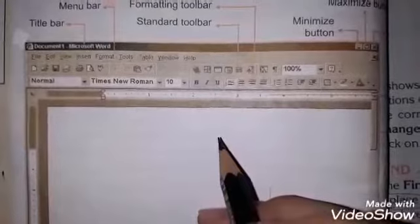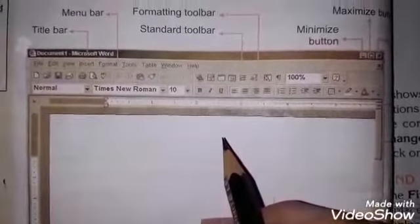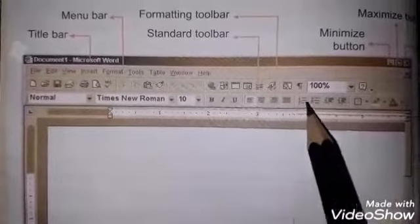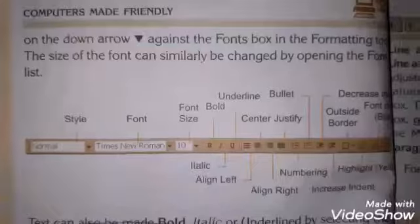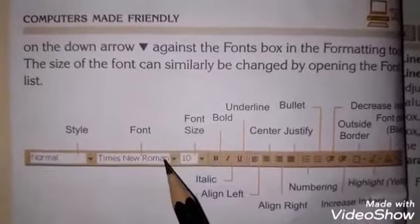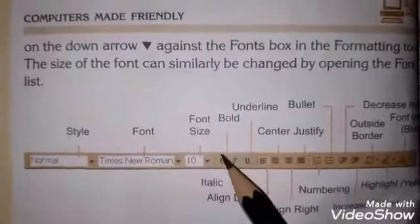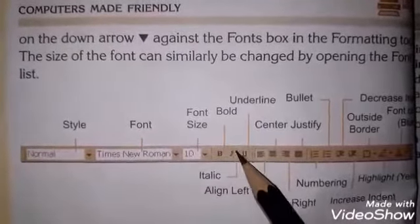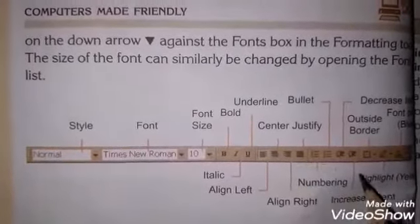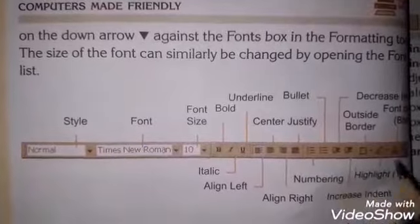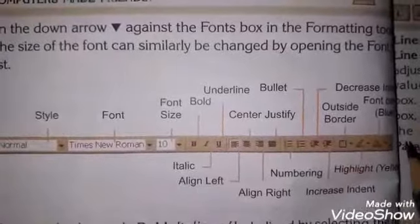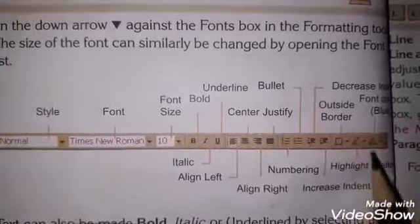اب جو text type کر رہے ہیں اگر آپ نے اس میں formatting کرنی ہے تو اس کے لئے formatting toolbar پہ click کرنا ہے۔ formatting toolbar میں یہ بتایا گیا کہ کس طرح کی editing کر سکتے ہیں: یہاں سے font کا style change کر سکتے ہیں، font size تبدیل کر سکتے ہیں، text کو bold، italic، underline کر سکتے ہیں۔ اس کے علاوہ alignment، numbering، اور bullet form میں بھی کر سکتے ہیں۔